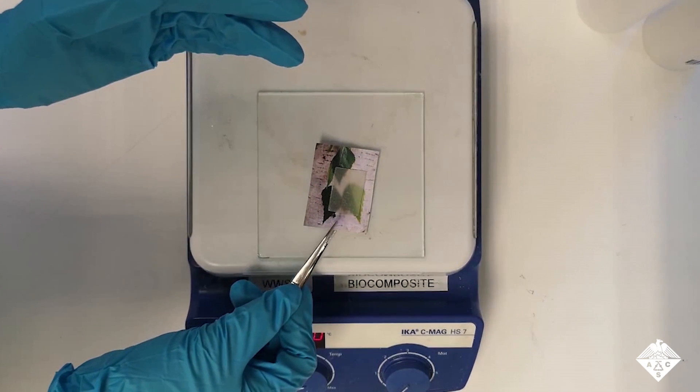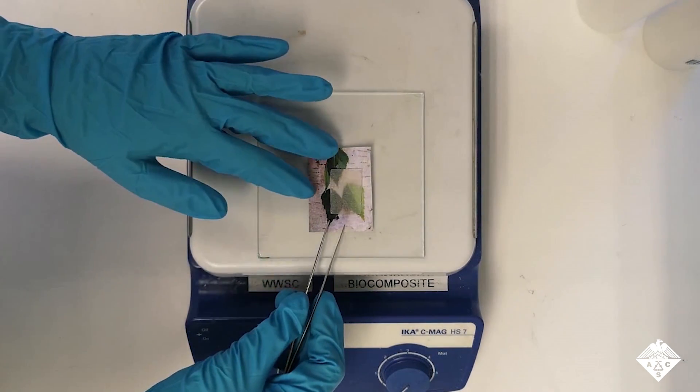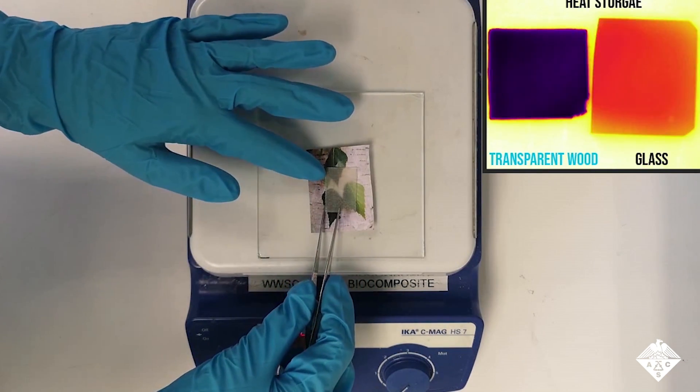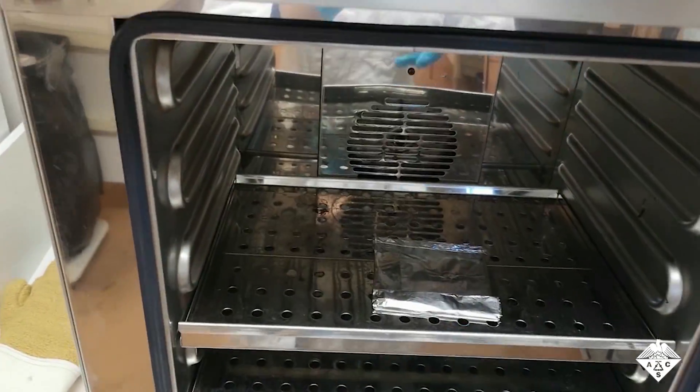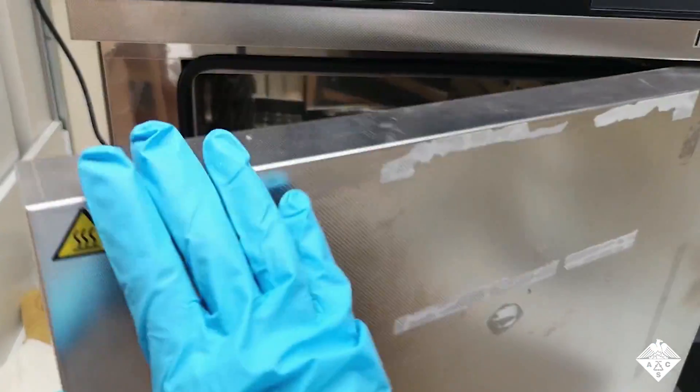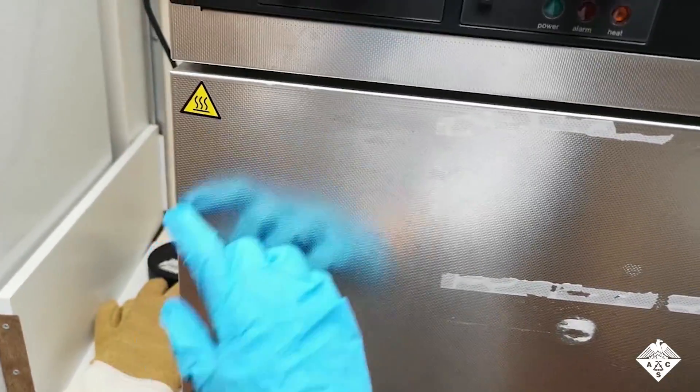PEG is known as a phase-changing material, meaning it can store energy when melted and release energy upon solidifying. Finally, the treated wood was heated in an oven, resulting in a strong, transparent, and biodegradable material.